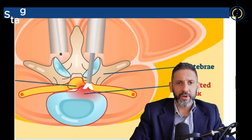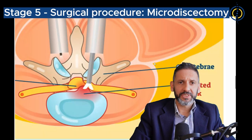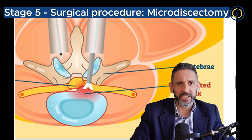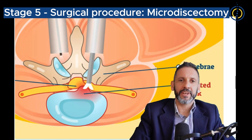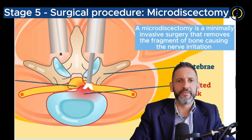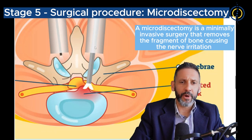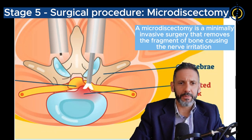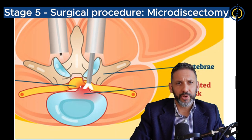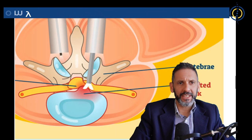If all of the above has failed, my final stage of treatment is a procedure called a micro discectomy. This is a minimally invasive surgery carried out under general anaesthetic through a very small incision in the lower back. Under the microscope, a small window is fashioned in the arch at the back of the spine, and that disc fragment that's pinching the nerve is shaved away to free up the nerve and alleviate the pain.